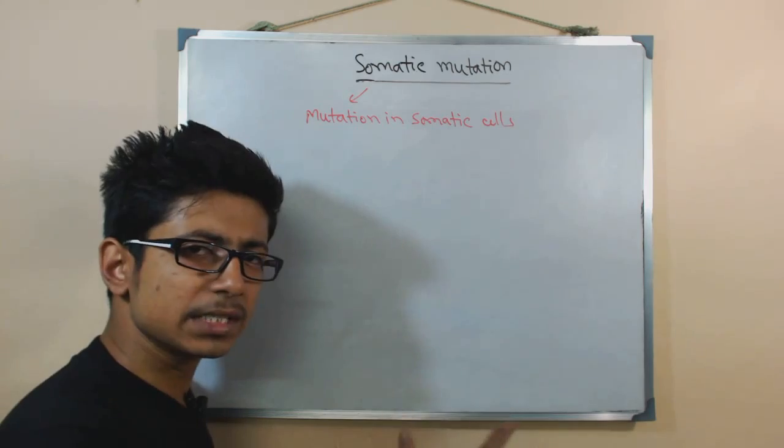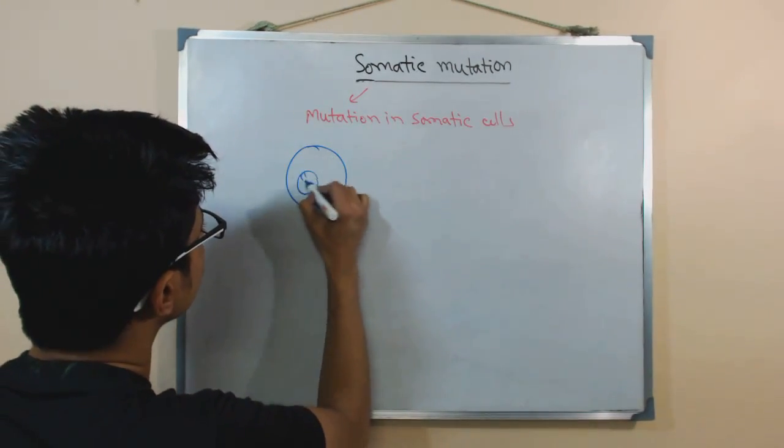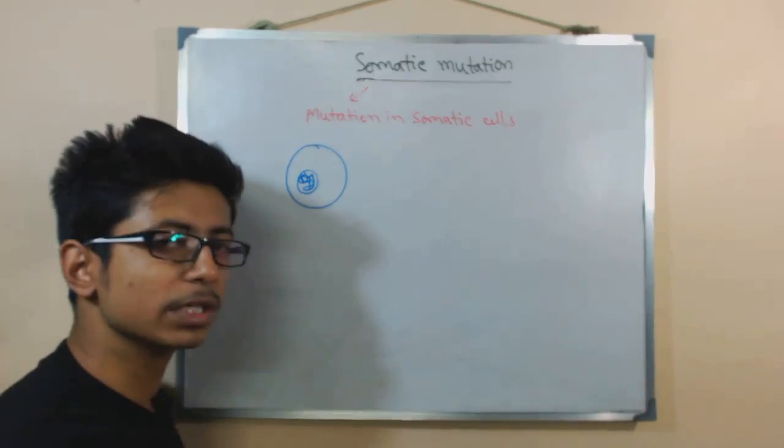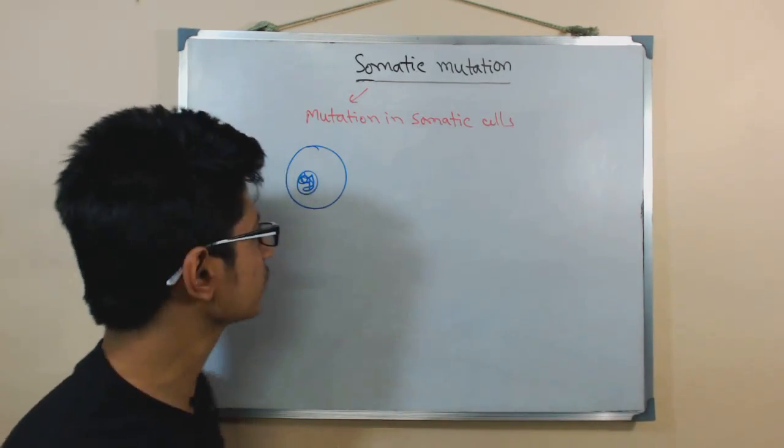In our body, we have different cells in different tissues. If you look at here in one cell, in each of the cells, we have nucleus. Inside the nucleus, we have chromosomes. Inside the chromosome, we have all this DNA and gene sections.